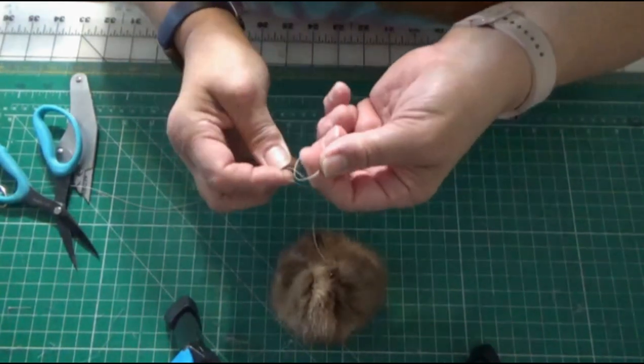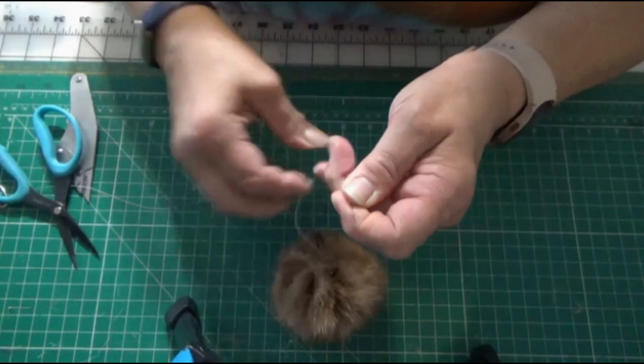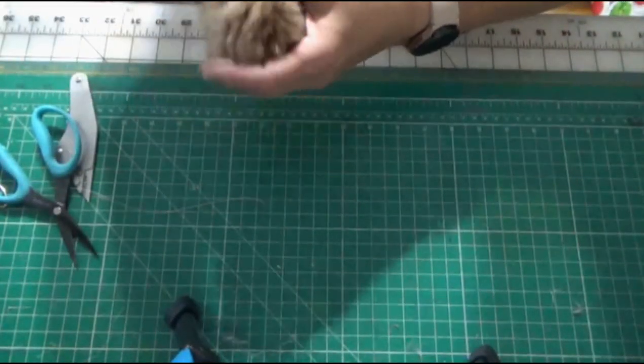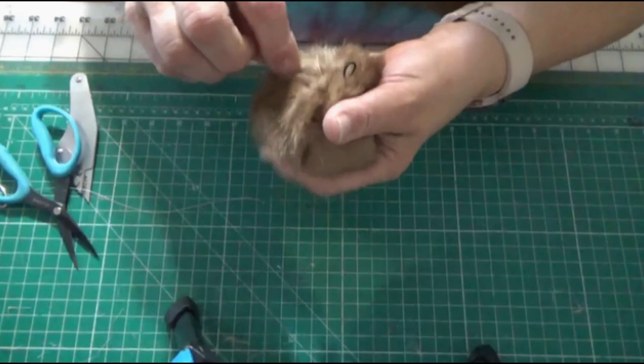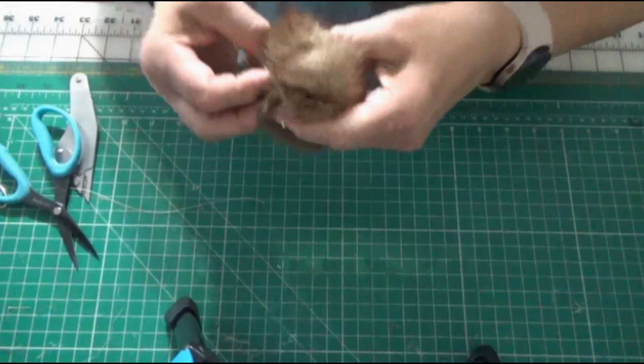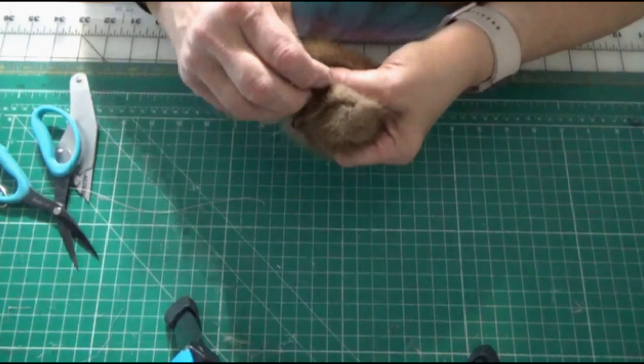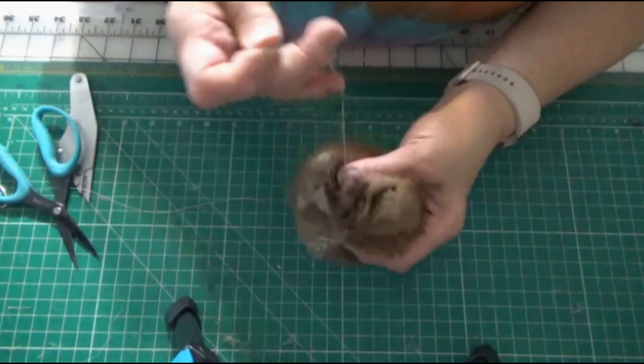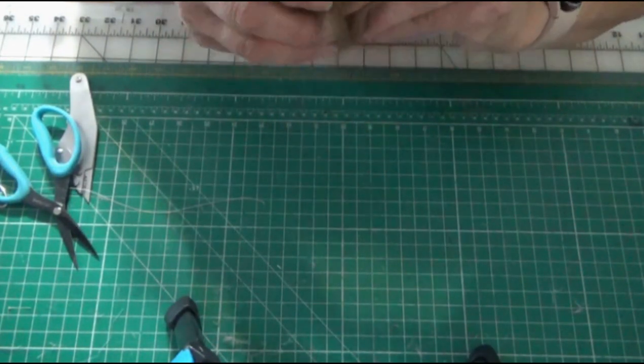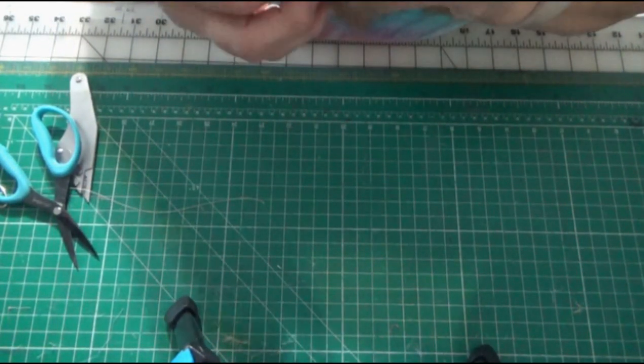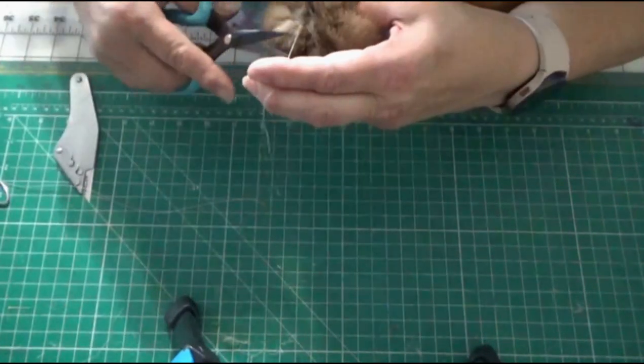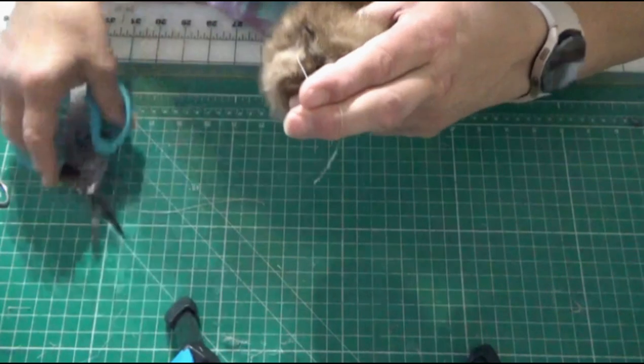And now I am going to do the same thing with the remaining piece. I usually knot it and then pull it through. Now I am going to do the same thing again, putting it down into the fur, then push it back in and out the other side. And cut it close.